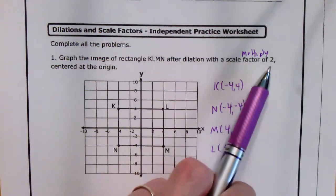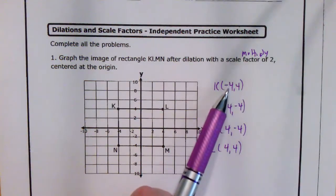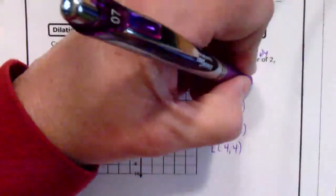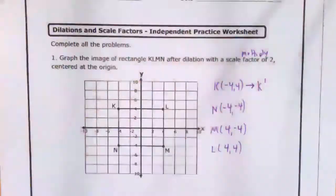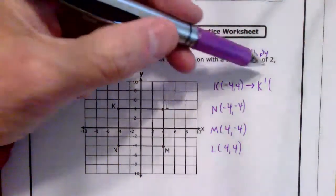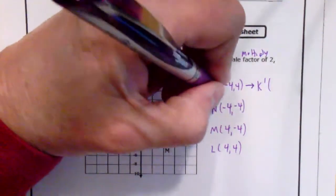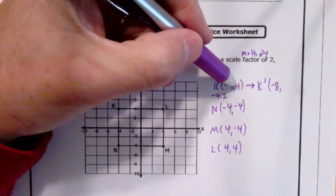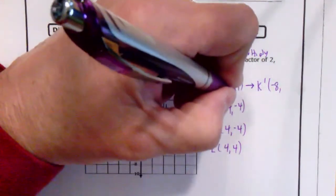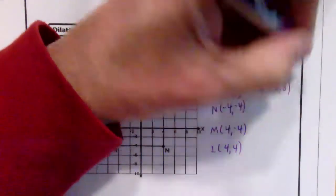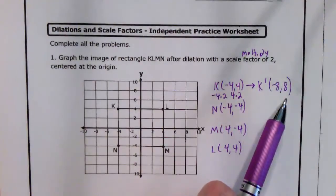Now we're going to take the scale factor and multiply it by each of these points — you can use a calculator if you want. We'll multiply the X value and Y value for K to get a new location for K. That little mark means new location. So we take negative 4 and multiply it by 2 — our new X is negative 8. Then we take 4 times 2, which is 8. So our new location for K is negative 8, 8.